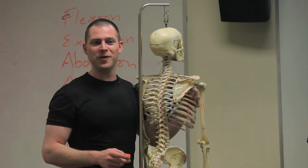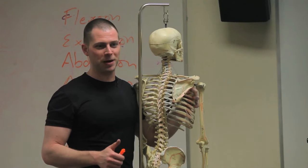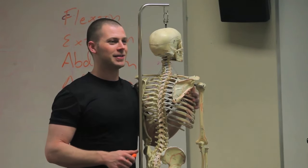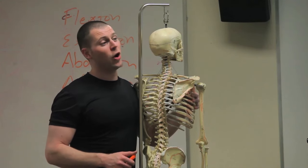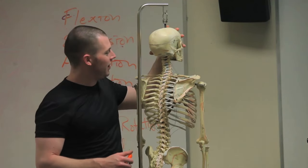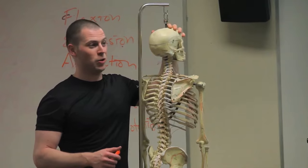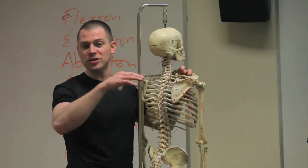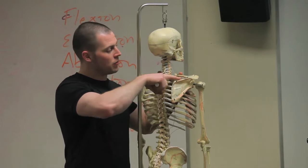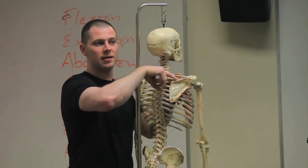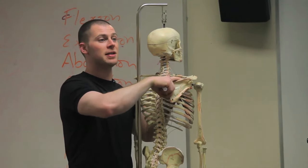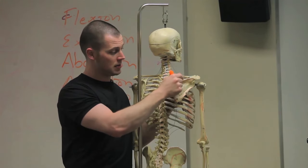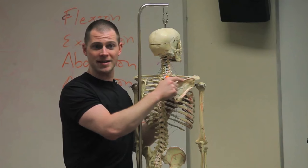What's the layman's term for fossa? We got 'bone bump' for tubercle and tuberosity. A fossa - a hole? No, that's a foramen - a hole. A fossa is like a depression, an indent. So this depression right here is the supraspinus fossa, which is superior to the spine of the scapula.